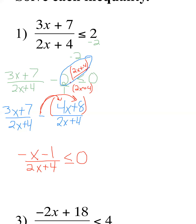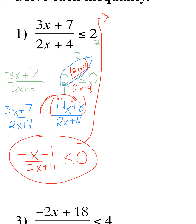Does that make sense? I subtracted that 2, then combined the fractions by getting common denominators and performing the operation in the numerator. Now it's like a problem from yesterday, but these I can factor. I'll take out a -1 from the top, leaving (x + 1), and from the bottom I can take out a 2, leaving (x + 2). So: -1(x + 1) / [2(x + 2)] ≤ 0.